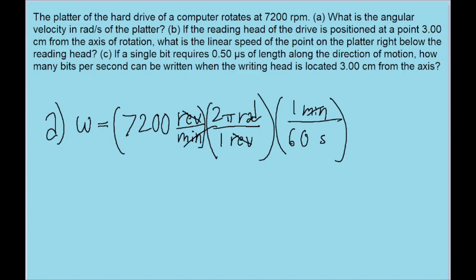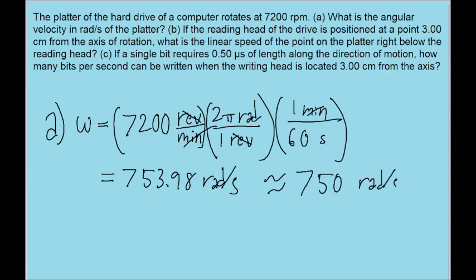If we put this into our calculator, we find an angular velocity of about 753.98 radians per second. You might be expected to round this down to two significant figures, so you might write an answer like 750 radians per second. Either answer works, though. I'm going to go with the one with more information since it'll prove to be more useful to us in the later part of the problem.